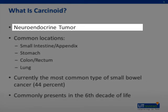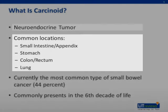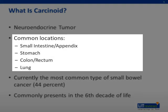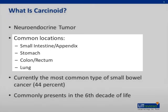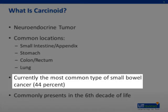Carcinoid tumor is a type of malignancy that is comprised of neuroendocrine type cells. Commonly, it's found in the small intestine, the appendix, the stomach, the colon or the rectum, or in some instances, the lung. Approximately 44% of patients who present with small bowel tumors are diagnosed with carcinoid, and this is the most common type of small bowel tumor.